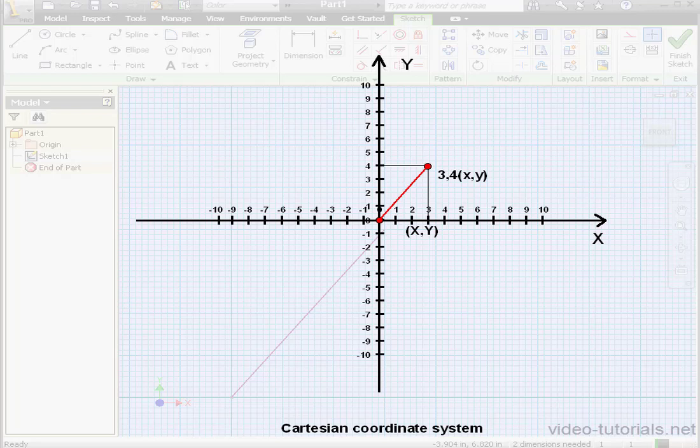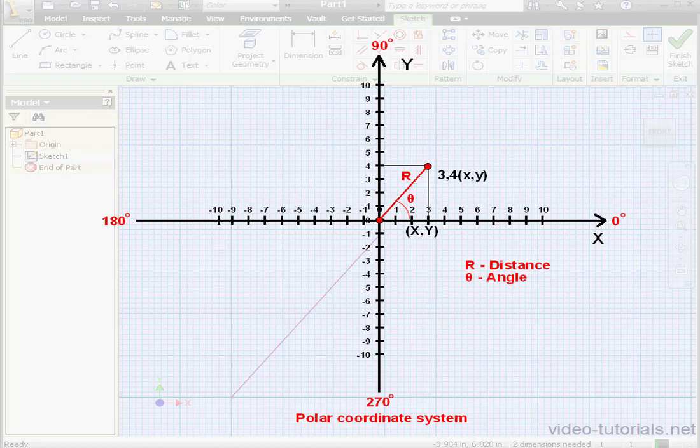Let's learn how to define this line in terms of polar coordinates. In the polar coordinate system, the positive x-axis is known as 0 degrees, the y-axis is defined as 90 degrees, the negative x-axis is 180 degrees, and the negative y-axis is 270 degrees.